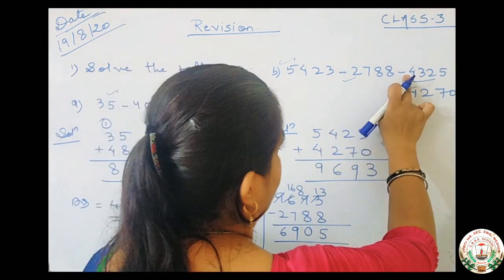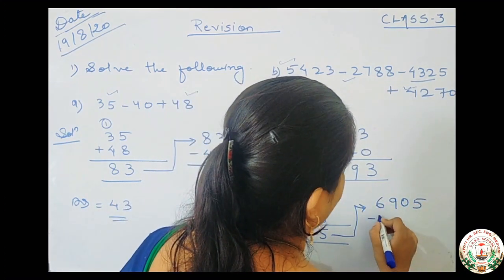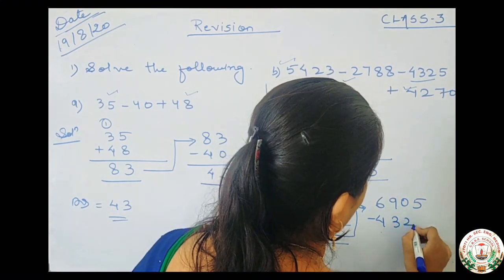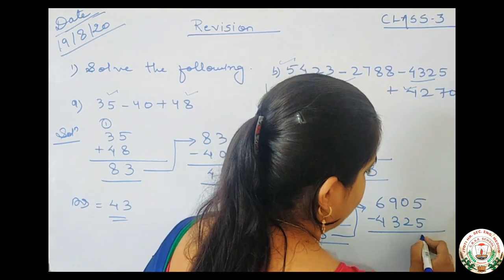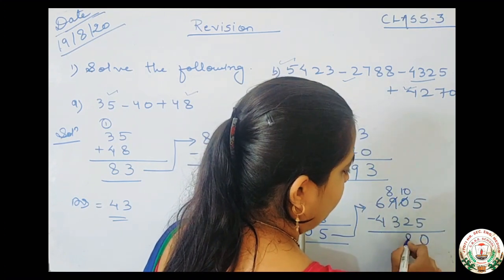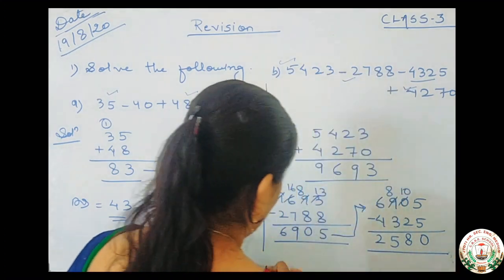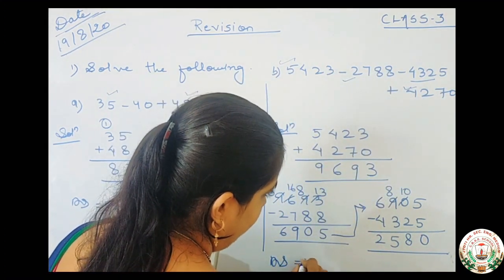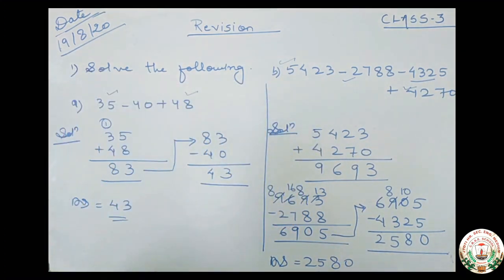One subtraction is still left. Now take 6905 minus 4325. 5 minus 5 is 0. From 0 we can't subtract 2, so take carry: 10 minus 2 is 8. 8 minus 3 is 5. 6 minus 4 is 2. So your final answer is 2080. In this way you will solve the question and whatever answer comes, you will tick that answer in the paper.